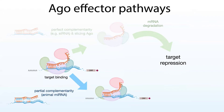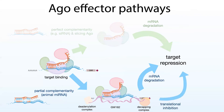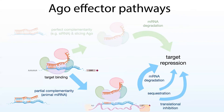The answer comes from Ago recruiting cofactors. It binds to a scaffolding protein of the GW182 family, and this is going to bring in decapping and deadenylation complexes. These are going to remove the protective ends of the messenger RNA, exposing them to exonuclease chewing, so you get mRNA degradation as well as translational inhibition — stopping the messenger RNA from being used to make proteins and sequestering the messenger RNAs. All of these are going to lead to target repression.